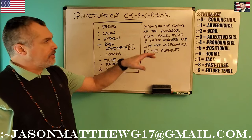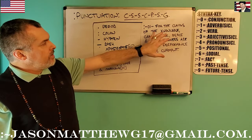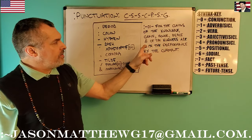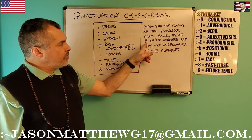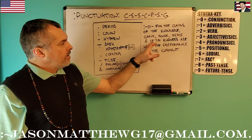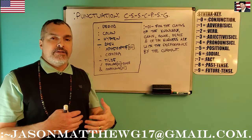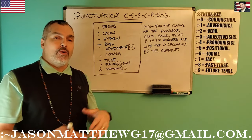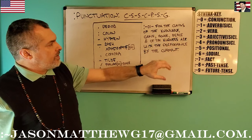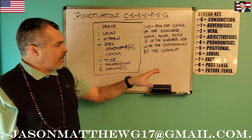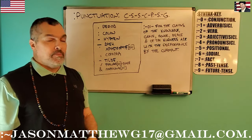Now here's another example of punctuation for you. Just like in the last set, we do the colon tilde zero-one dash to denote that this is a location within the numerical set, and this claim is the zero-one claim. For the claims of the knowledge, grace, honor, peace, and of the kindness are with the performance by the claimant. You see here I use the comma to group together facts. And after the ampersand here, which means 'and,' I've put 'of the kindness.' The conjunction is a neutral bridge between facts — sevens, or five-six-sevens. So the comma groups together these facts: the knowledge, grace, honor, peace, and kindness. Checking the sentence backwards: 'For the claimant of the performance is with the knowledge, grace, honor, peace, and with the kindness by the claims. Period.'